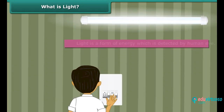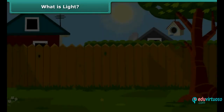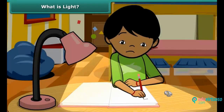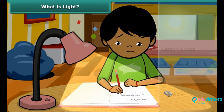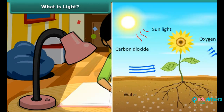Light is a form of energy which is detected by the human eye. It is everywhere around us. It not only helps us to see things, but it is also needed by plants to produce food for us.